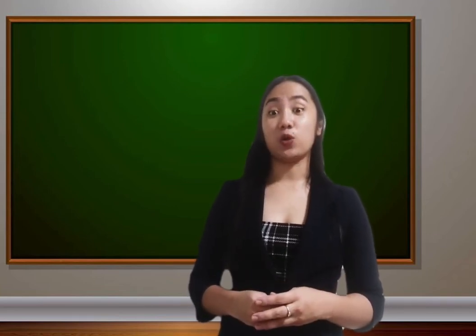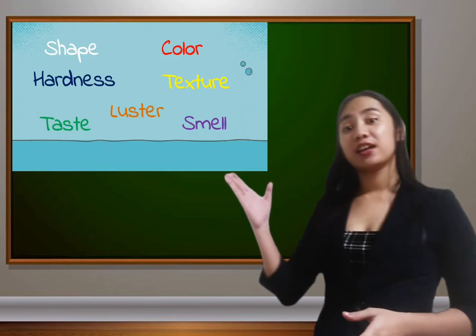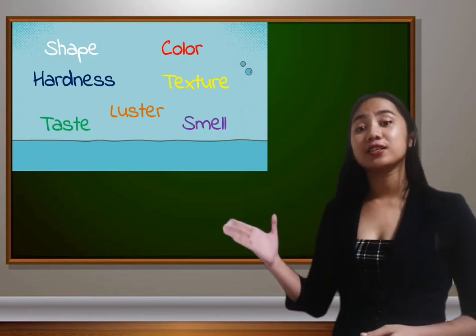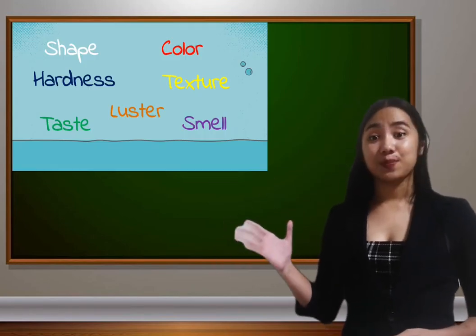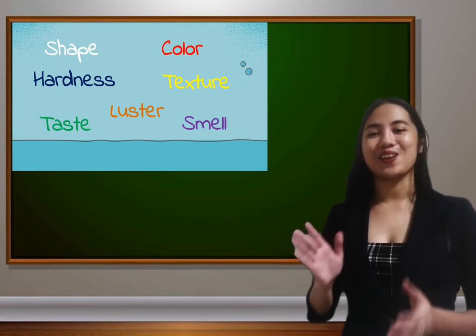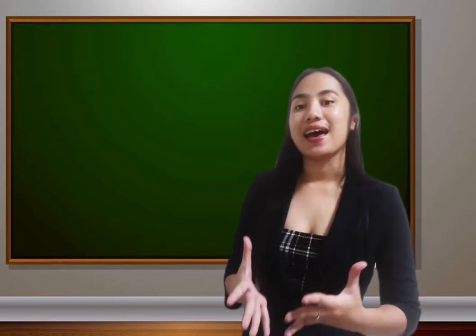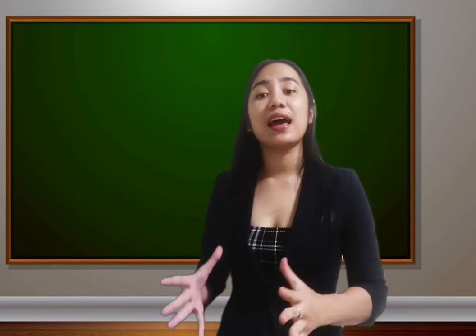So what are the observable characteristics of solids? We have the shapes, color, texture, hardness, luster, smell, and taste. That's a good job. So now that you have watched the video and I have explained the different characteristics of solids, I trust that you can now identify these characteristics.